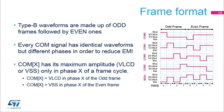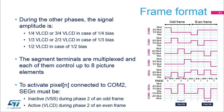All COM signals have identical waveforms but a different phase in order to reduce electromagnetic interference. COM X has its maximum amplitude only during phase X of a frame — that is to say, VLCD during odd frames and VSS during even frames. During the other phases, the signal amplitude is one-quarter VLCD or three-quarters VLCD if a one-quarter bias is selected, one-third VLCD or two-thirds VLCD if a one-third bias is selected, and one-half if a one-half bias is selected.